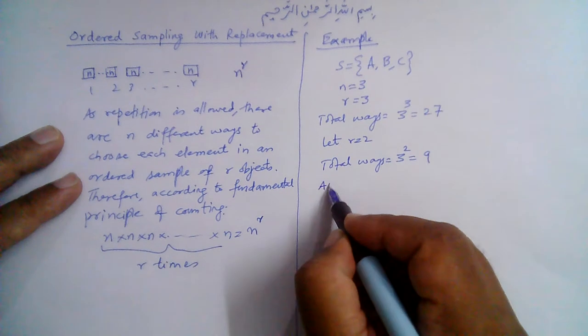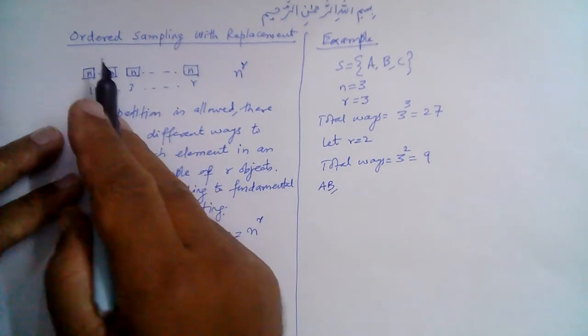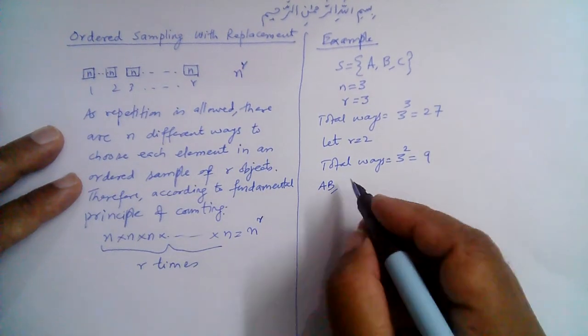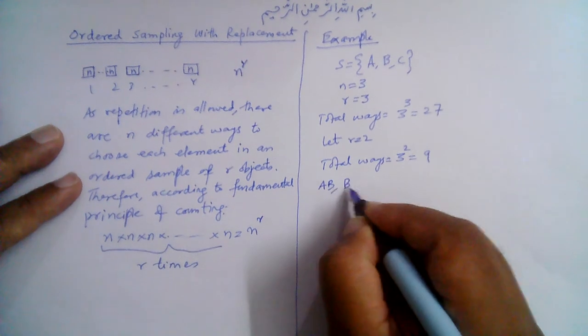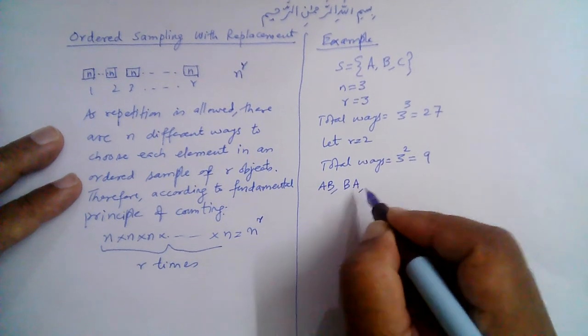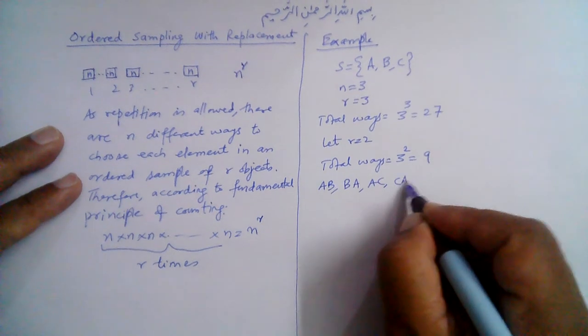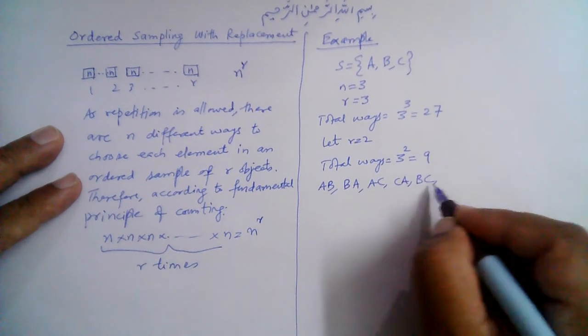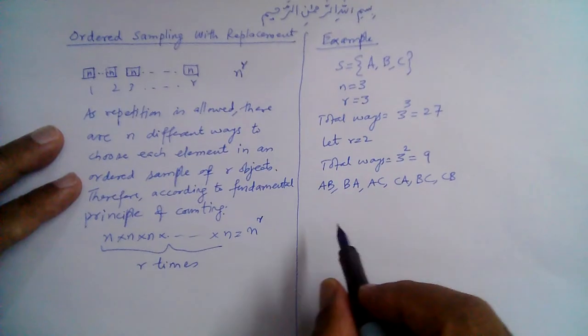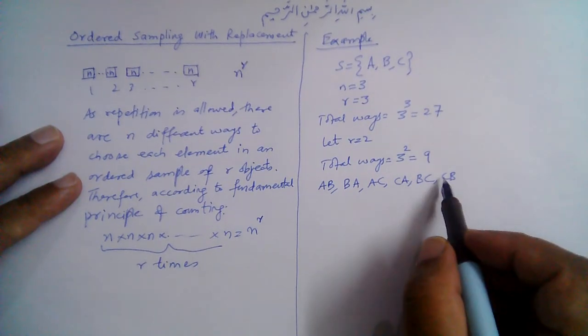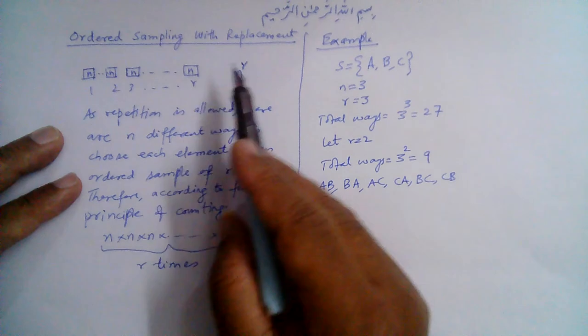One possible arrangement is, for example, AB. This is ordered sampling, right? So order is important. So AB is different from BA, this is a different sample. Similarly, we can have AC and we can have CA, we can have BC, then CB. So these are six different samples.